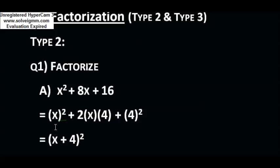According to identity 1, we identify a = x and b = 4, giving us a² + 2ab + b². So the expression can be written as x² + 2(x)(4) + 4², and in the last step you can write it as (x + 4)². We are applying identity number 1: (a + b)² = a² + 2ab + b², where a = x and b = 4.